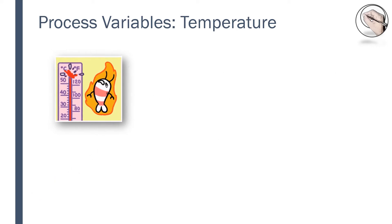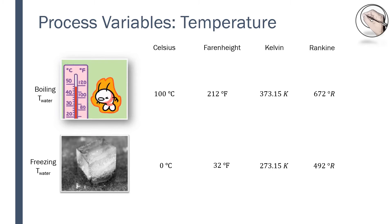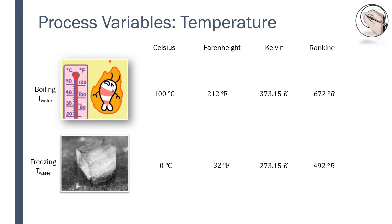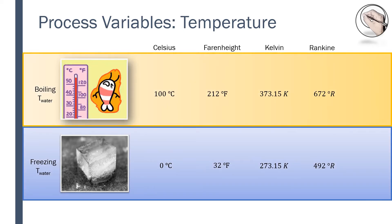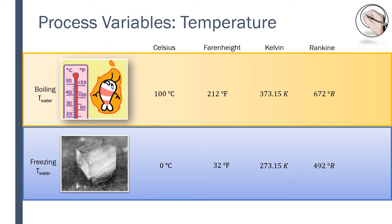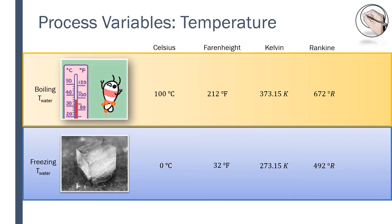There are different temperature numerical scales that can be used to report measured temperature. These scales are developed by assigning a value to two physical phenomena that are reproducible. For example, assigning zero to the freezing point of water and a hundred to the boiling point of water at one atmosphere. The assigned values specify the whole scale because they also specify the length of a unit temperature interval known as a degree.